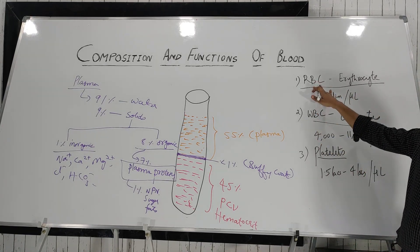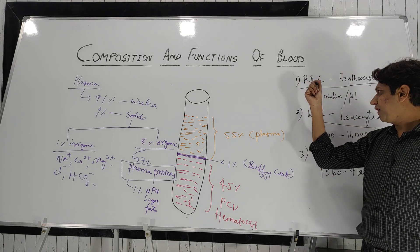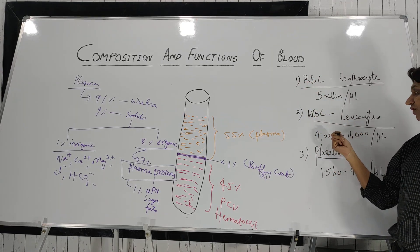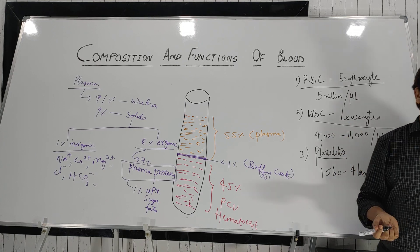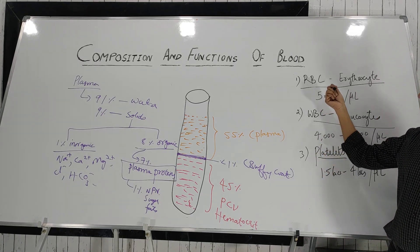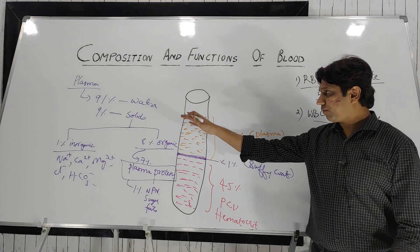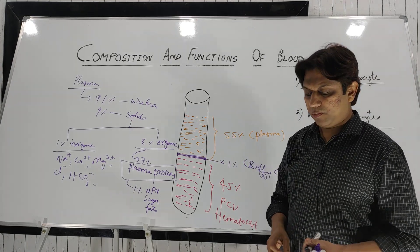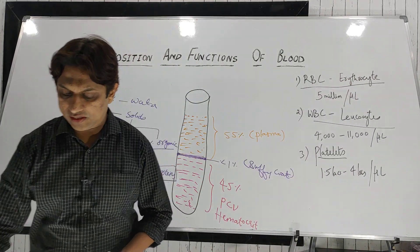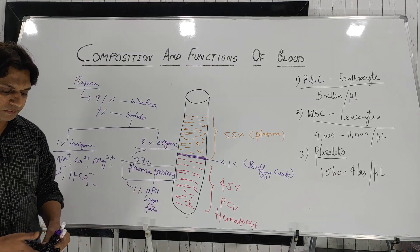Just to revise: RBCs are in millions, platelets are in lakhs, and WBCs are in thousands. RBCs are the most numerous cells in the blood. This is about the composition of the blood. Coming to the second part of today's lecture — functions of the blood.